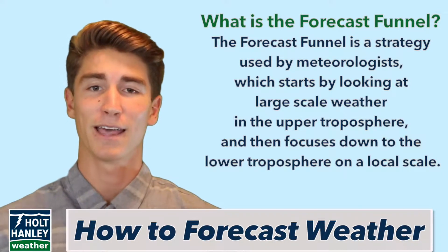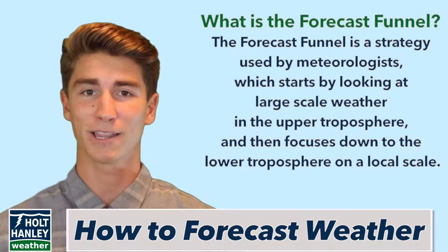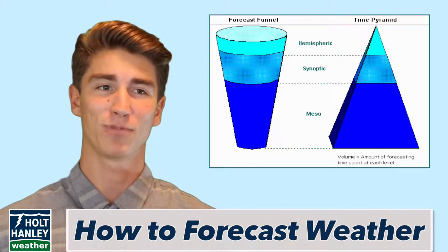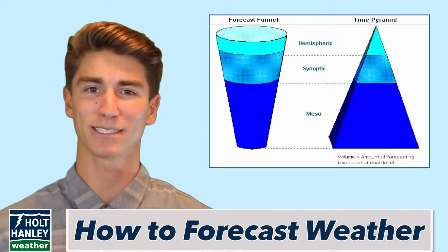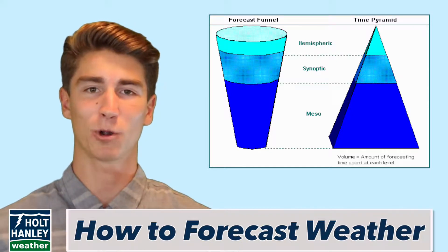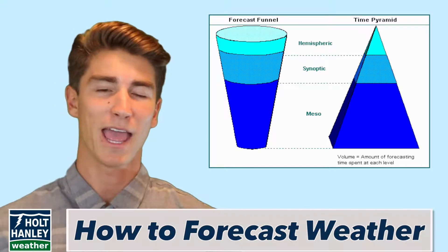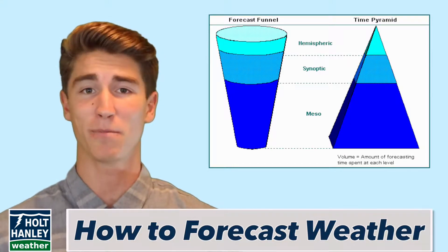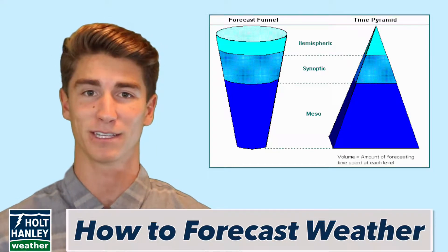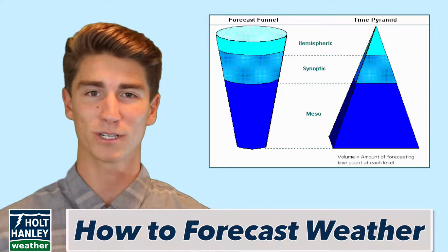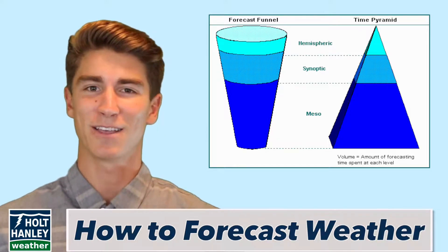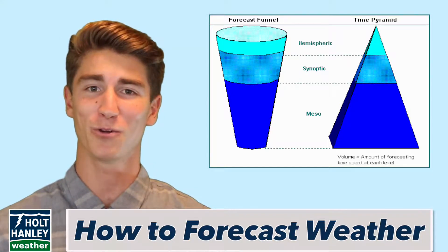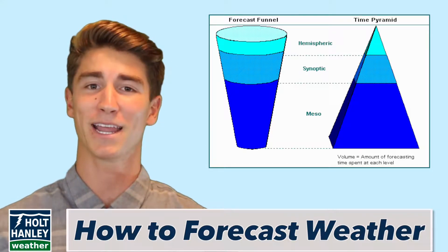Once you've done that, you look one day into the future, two day, all the way up to maybe your five day forecast. You may want to spend five to ten minutes looking at that upper troposphere continental scale, and potentially hours looking at that local scale depending on how serious the upcoming event is. The reason you spend more time on the local scale is because this is the one area where humans still have a leg up on the computer models — but we'll get more into that in my next video.